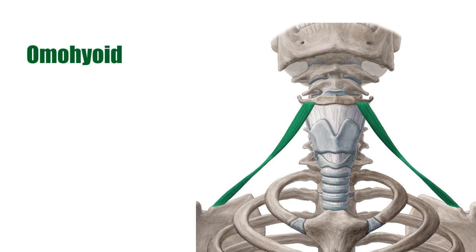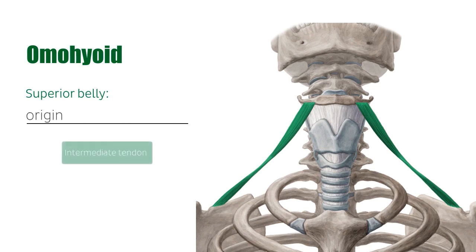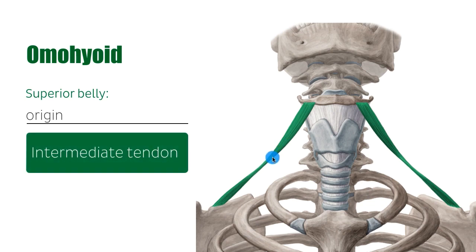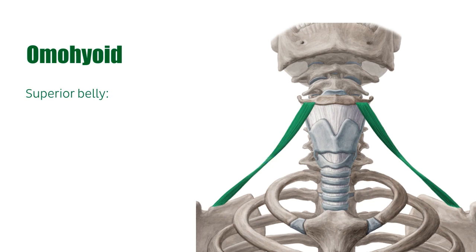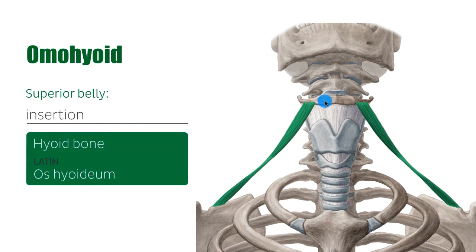The superior belly of the omohyoid starts at the intermediate tendon and goes all the way to insert on the hyoid bone, as clearly seen here. This is the anterior — or ventral — view of the hyoid bone, and it serves as the attachment point for the superior belly of the omohyoid.